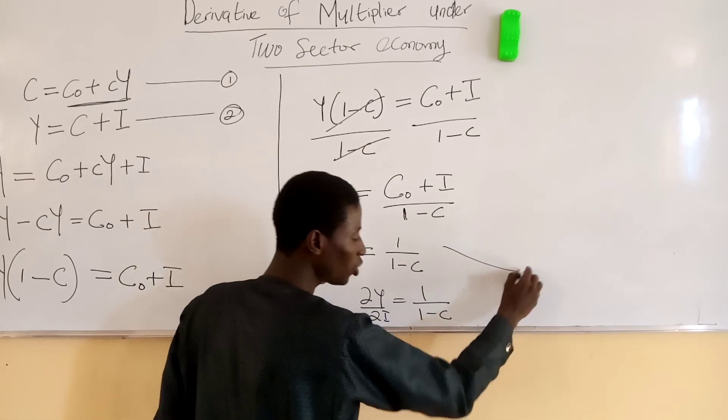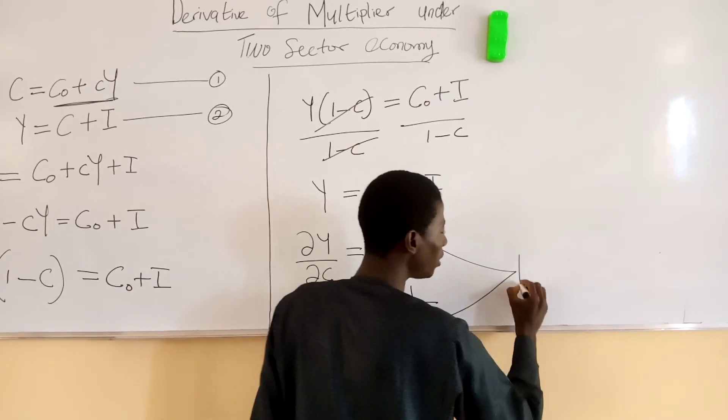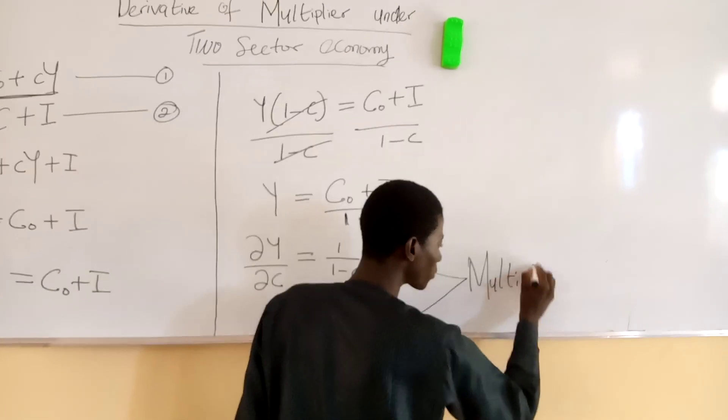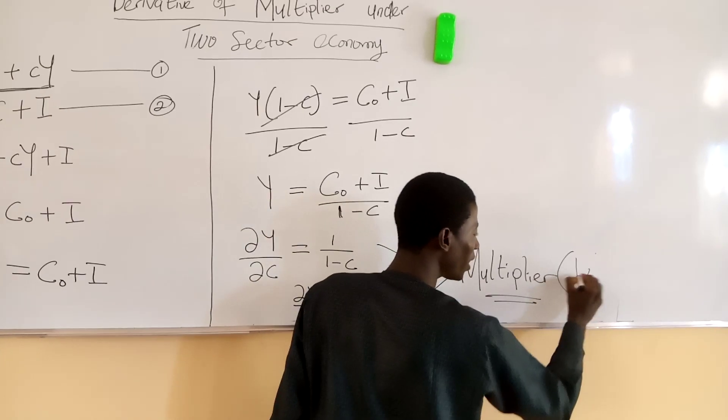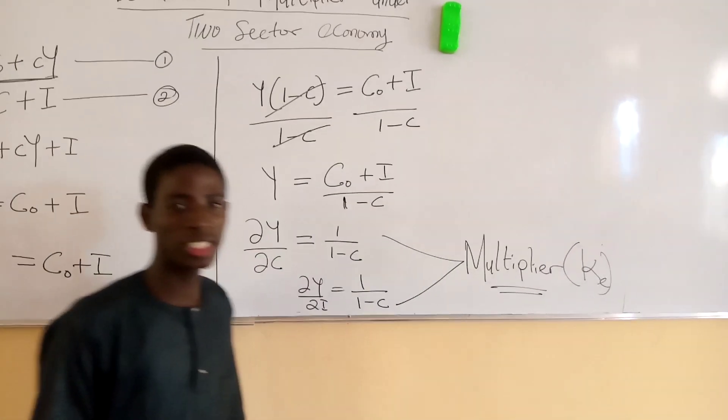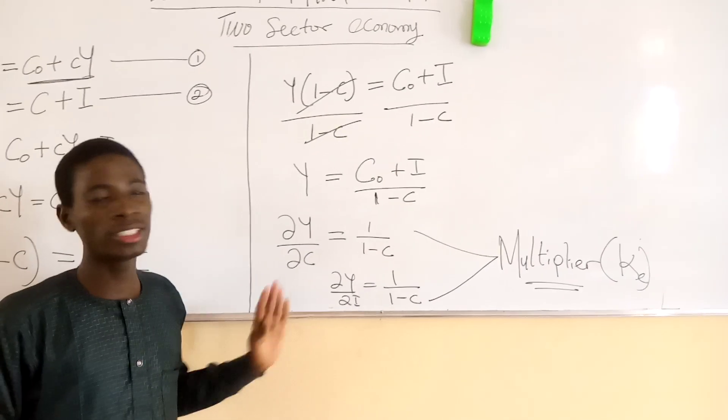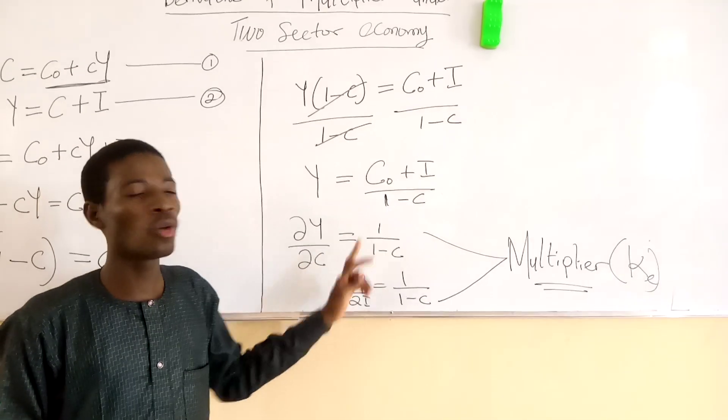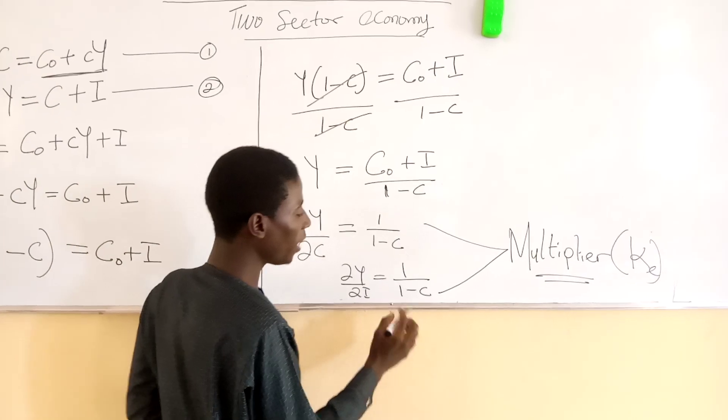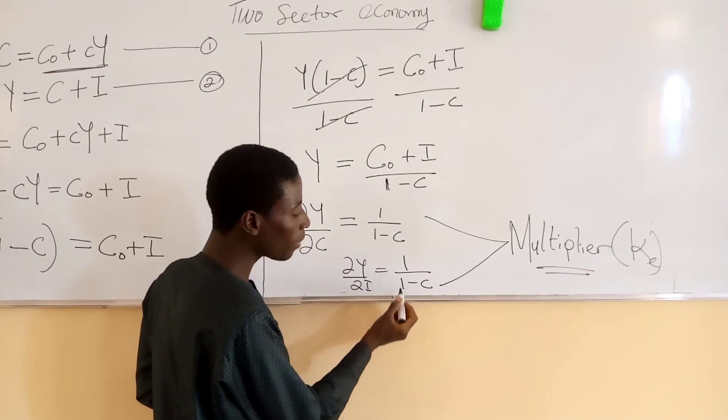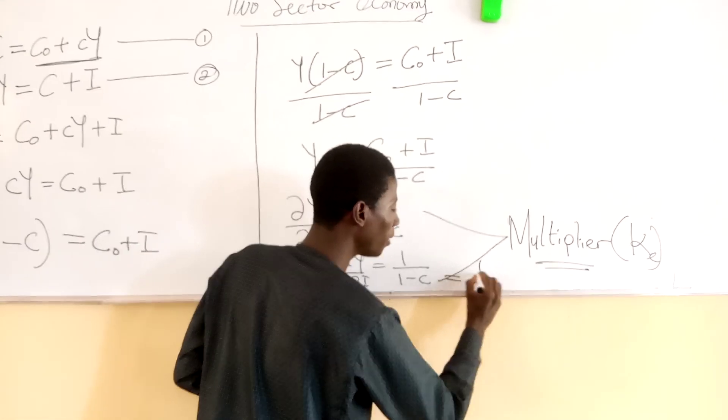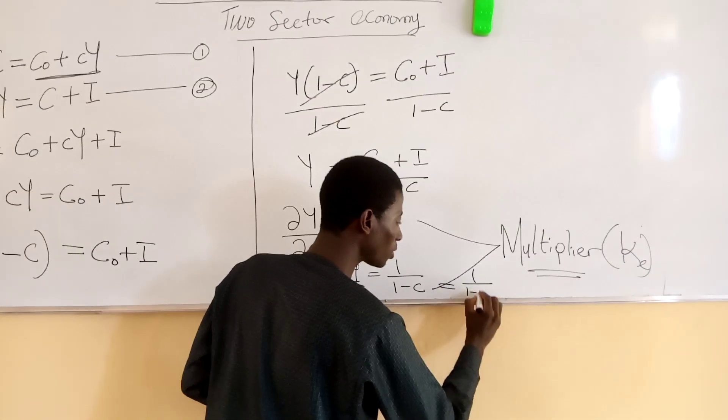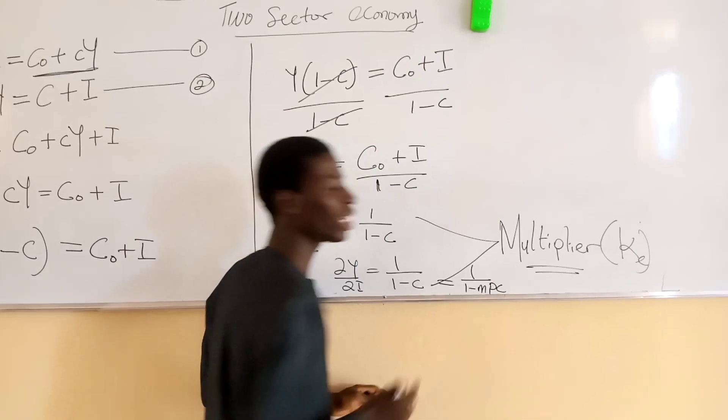By implication, we can call this our multiplier. What do we mean by multiplier, represented by Kp? Mathematically, that is all about derivation of multiplier, which is one over one minus c, or by implication, one divided by one minus MPC, which is also known as one over one minus MPC. That is our multiplier.